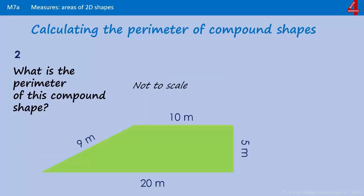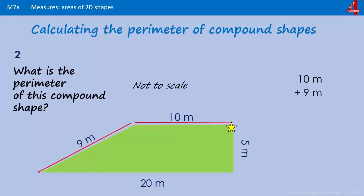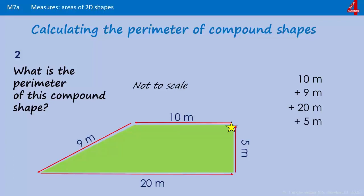What is the perimeter of this compound shape? Pause the video and have a go. Starting here, walking along the top that's ten meters, down here that's nine meters, twenty meters across the bottom, and back to the beginning — that's five meters up. Adding those together, the perimeter of this shape is 44 meters.